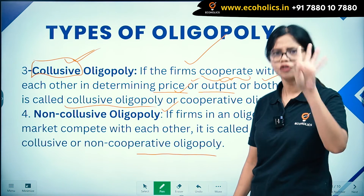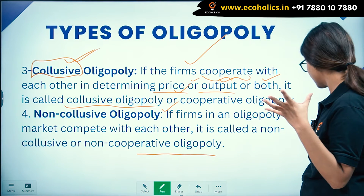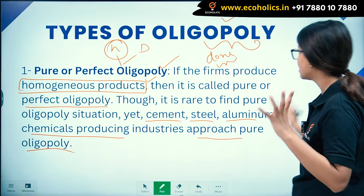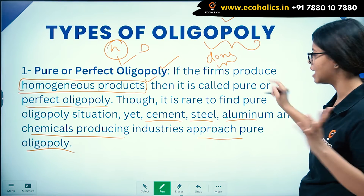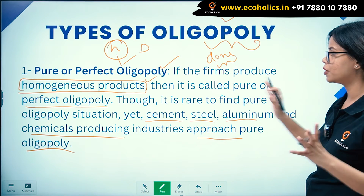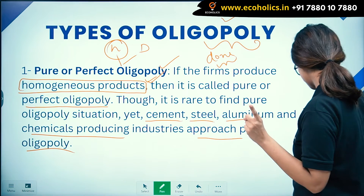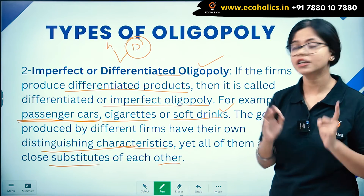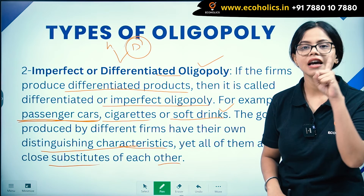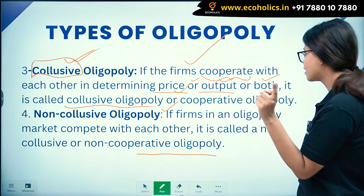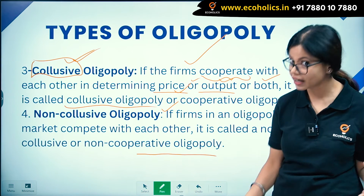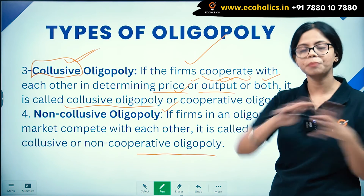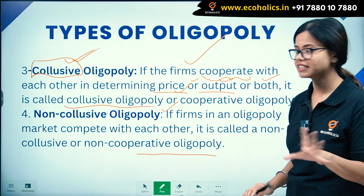To recap: pure or perfect oligopoly — firms sell homogeneous products, examples include cement, steel, and aluminium industries. Imperfect or differentiated oligopoly — firms produce differentiated products. Collusive oligopoly — firms form a collusion and cooperate with each other. Non-collusive oligopoly — firms compete and have not formed any collusion.